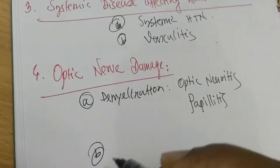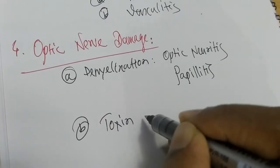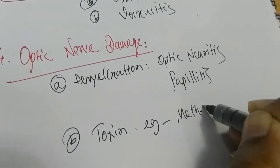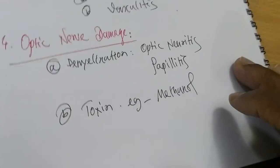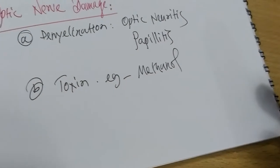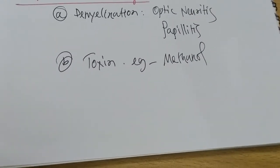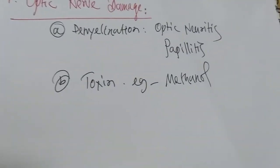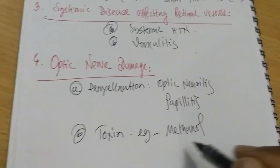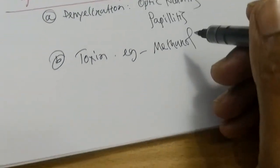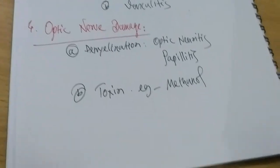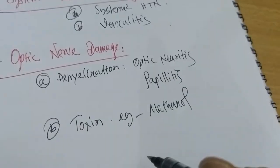Number four is toxin. The most important example is methanol. In our clinical wards, several times we found this type of patient — an alcoholic patient who unfortunately took methanol instead of ethanol, or ethanol mixed with methanol like spirits. They present with severe eye pain and loss of vision. This is due to methanol-mediated optic nerve damage, and on examination we find bilateral optic disc swelling.